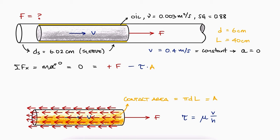As for the shear stress, the thickness of the film would be the difference between the two radii. This can also be written as the difference between diameters divided by two.